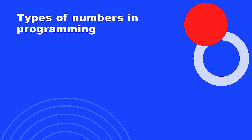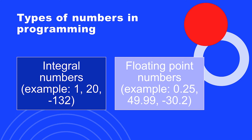When it comes to numbers, we actually have several different data types to work with in C# and generally in programming. There are plenty of good reasons why we need to make these distinctions between integral numbers and floating point numbers. Everything boils down to how many bits we actually allocate in memory, and we have different needs based on the different types of numbers.